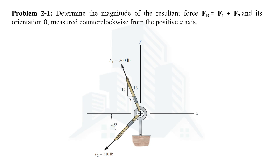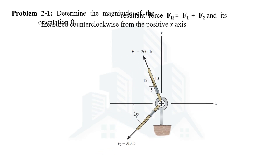Hello everyone. In this video we are going to solve the first example of chapter 2, Force Vectors, in the book Engineering Mechanics: Statics by R.C. Hibbeler. In this example we are asked to calculate the resultant force Fr and its orientation, which should be measured counterclockwise from the positive x-axis.